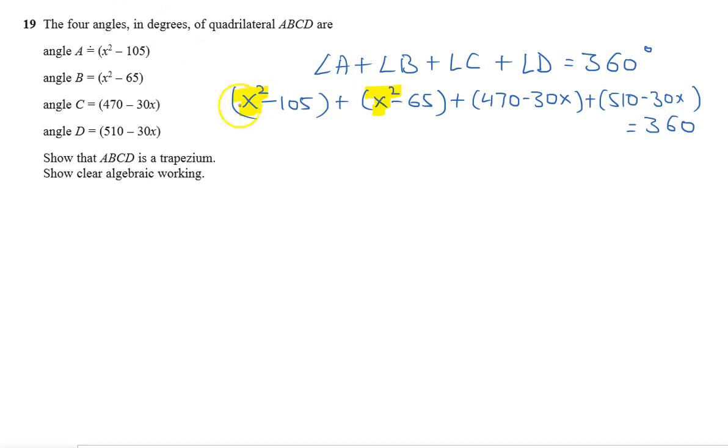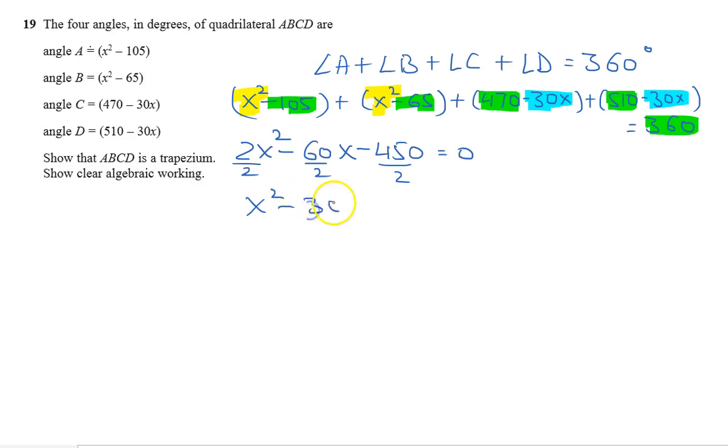So we have x square and x square, that will be 2x square. Then we have the terms of x: minus 30x minus 30x, so that will be minus 60x. Minus 105 minus 65 plus 470 plus 510 minus 360, this all will give you minus 450, equals 0. We can divide each by 2, so that is x square minus 30x minus 225 equals 0.